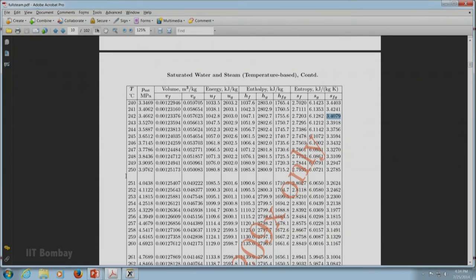Here we are, table number 1 at 250 degree centigrade, P_sat_T is 3.9762 MPa as we know. Corresponding to that we can get the values of Vf, Uf, then Hf and Sf.